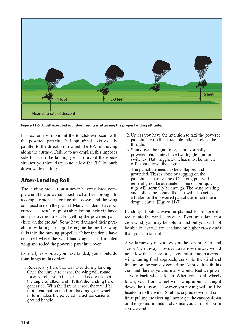1. Release any flare that was used during landing. Once the flare is released, the wing will rotate forward relative to the cart. That decreases both the angle of attack and lift that the landing flare generated. With the flare released, there will be more load put on the front landing gear, which in turn makes the powered parachute easier to ground handle.